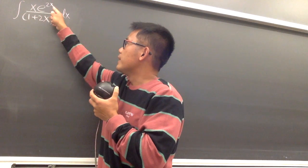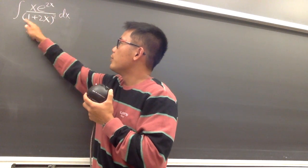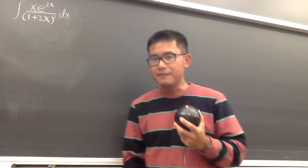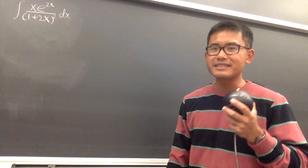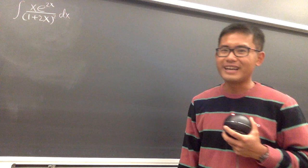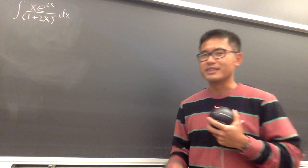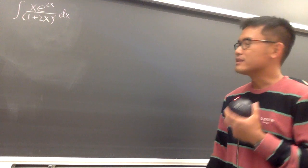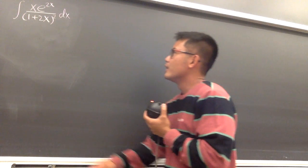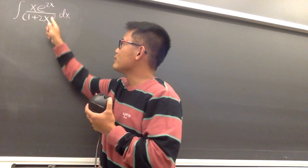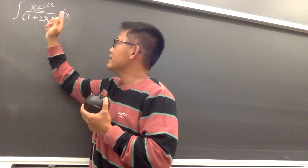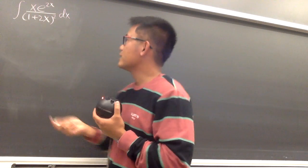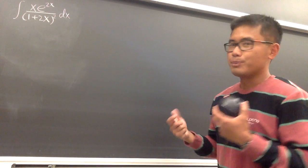We're going to integrate x times e to the 2x, all over parentheses 1 plus 2x, raised to the second power. I've done this integral in the past, but this time I will do this legitimately. I'll do it from scratch and show you all the technical, legitimate steps. As we can see, we have a fraction and also an exponential, and power-wise this is a rational function — it's just pretty crazy.